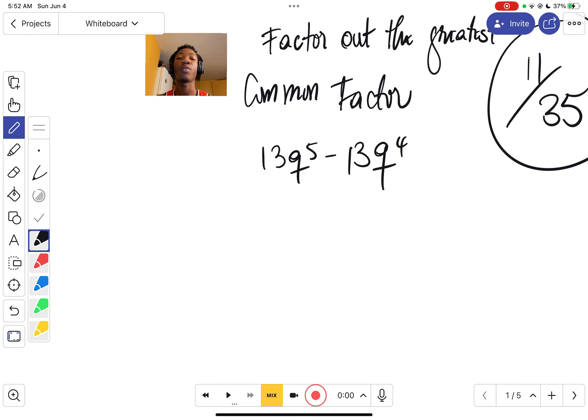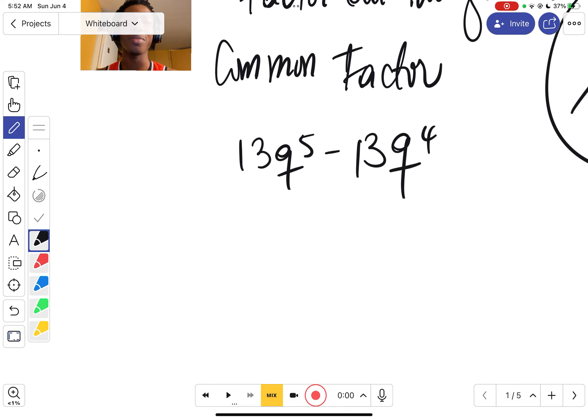So we have two terms to factor. The first term is 13q^5 minus the second term, which is 13q^4. We're going to factor these terms.